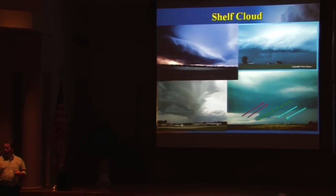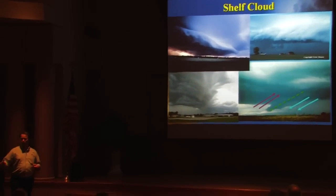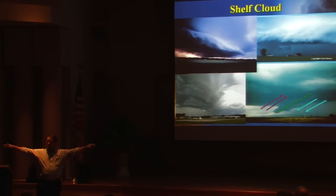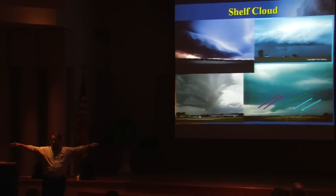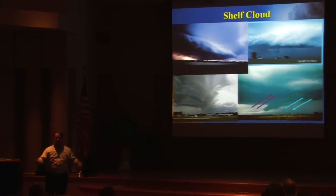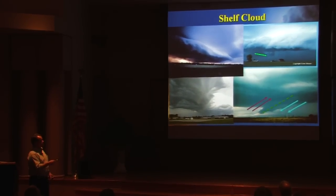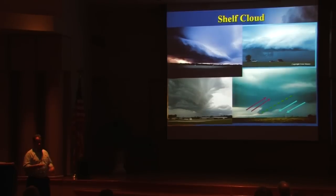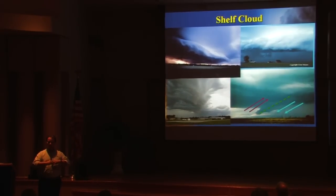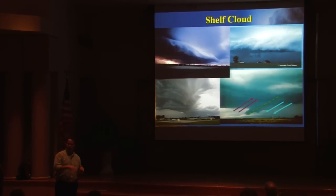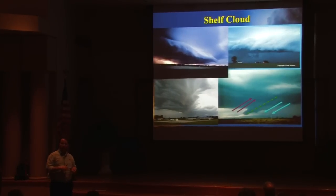The shelf cloud that precedes the squall line runs parallel to the ground. When it gets very close, it looks like it's running horizon to horizon — literally miles and miles long. They don't all look exactly alike, but they all look similar, and the fact that they're running parallel to the ground means they all represent the same thing: downdrafting and outflowing air ahead of the precipitation area.